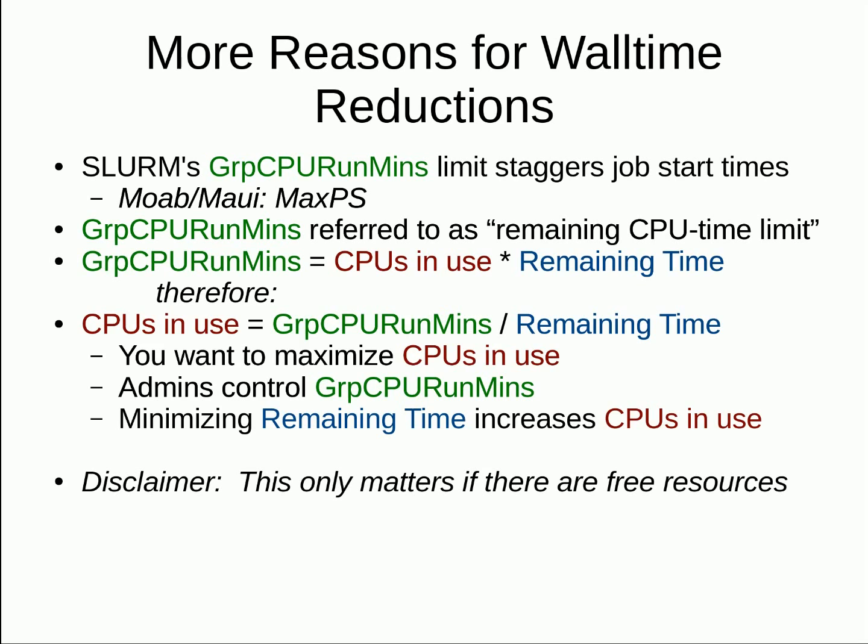Note that this only matters if there are free resources and you're bumping up against a limit. One other thing to note is that BYU sets this limit on the account or research group level. If your group is hitting this limit, you may want to talk to your group members about wall time reductions. This limit effectively staggers the start time of a user's jobs. Users with the most jobs end up with jobs finishing very frequently, thus decreasing the queue time for other people since there are always jobs finishing. It also allows people with long jobs to get work done, but somewhat penalizes them for tying up nodes for longer in an inflexible manner.